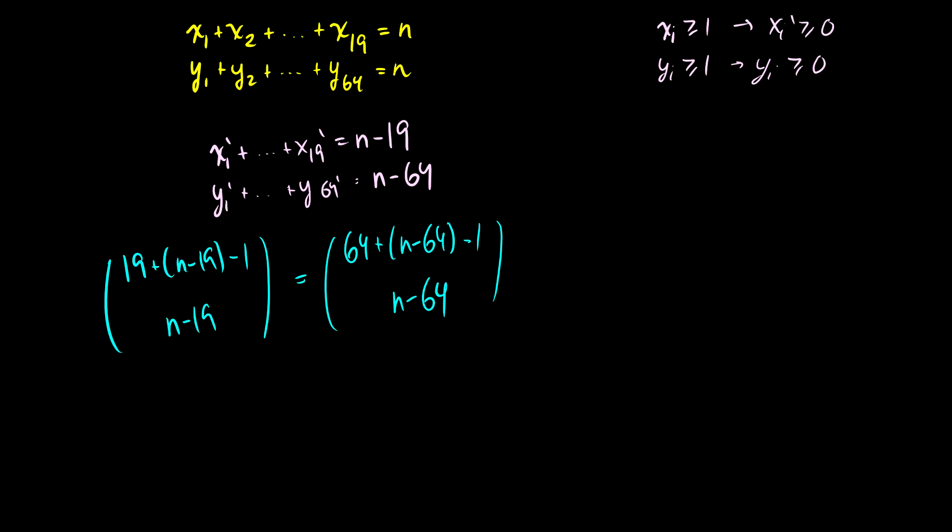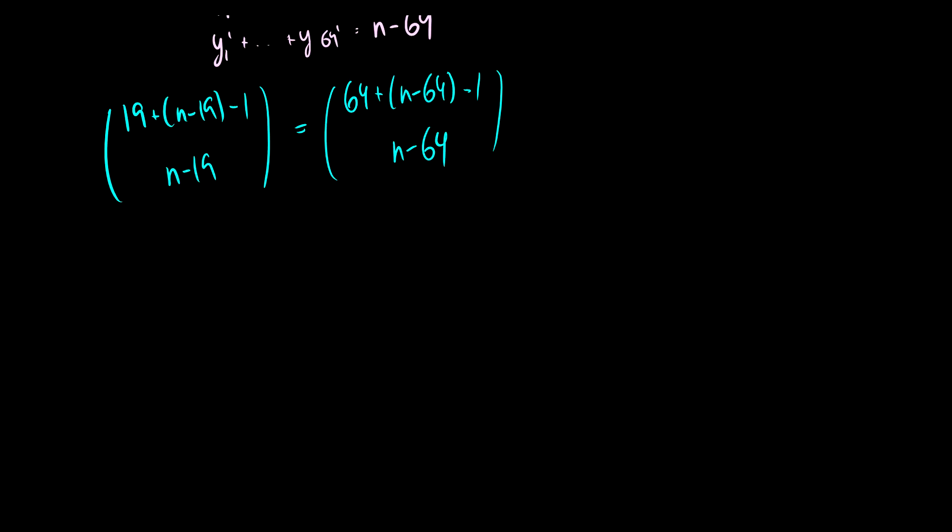Okay, let's do some simplification here. So the 19 and minus 19 will cancel, so we're going to be left with n minus 1 choose n minus 19. And then on the right side, the 64s will cancel, so we'll have n minus 1 choose n minus 64. Okay, so now these two have to have the same number of solutions.